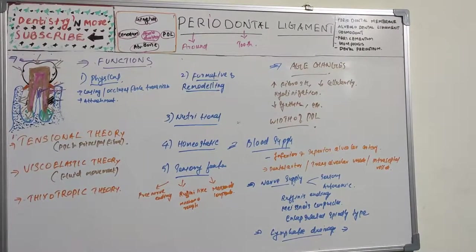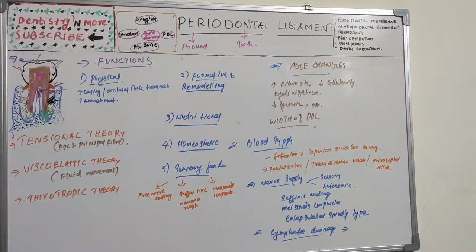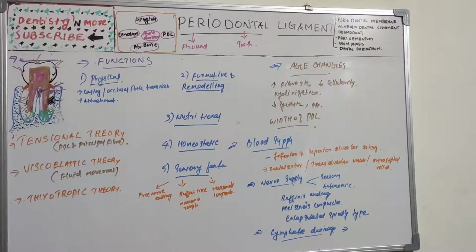Nerve supply includes sensory and autonomic fibers via the trigeminal nerve. Four types of nerve endings are present: Ruffini endings near the root apex acting as mechanoreceptors, Meissner's corpuscles at the mid-root for tactile perception, encapsulated spindle-type endings (temperature receptors) at the root apex, and free nerve endings. Lymphatic drainage follows the course of blood vessels.